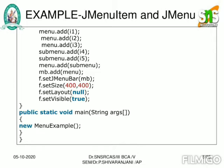I add the menu inside the menu bar MB, then add that menu bar inside the created window (frame). I set the window size to 400x400 and make the frame visible to the user. In the main program, I create an object for the class MenuExample. This causes the constructor to be automatically loaded, displaying the output we saw earlier.